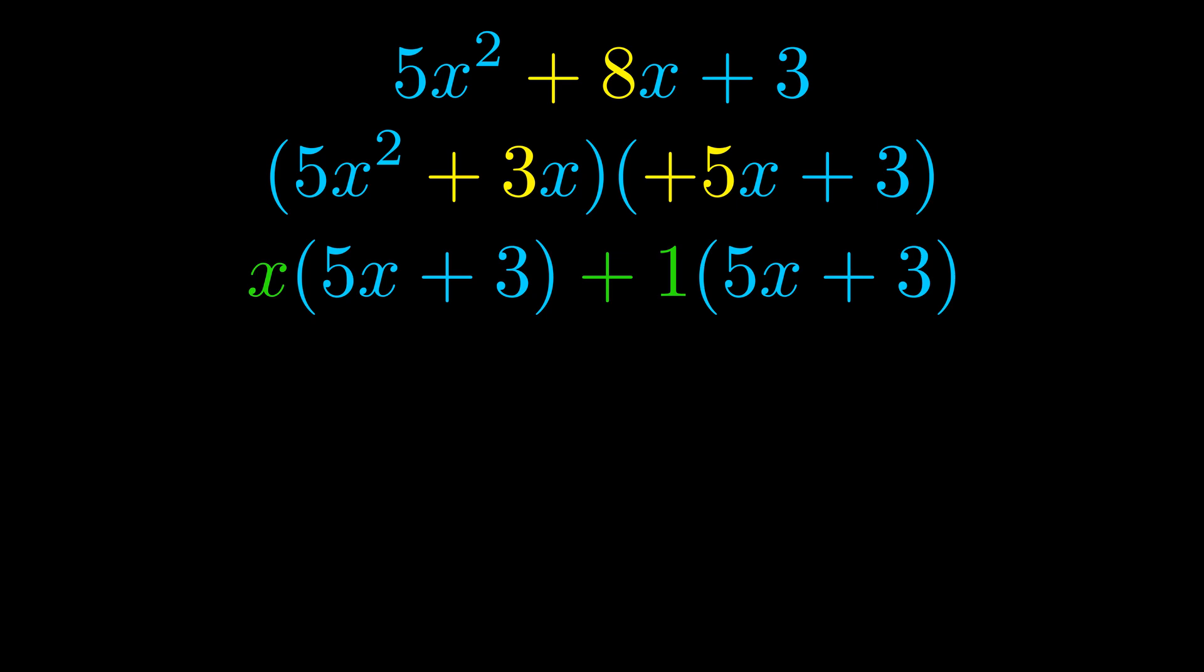Notice also how what remains inside of the parentheses is the same in both cases. The blue values are the same. Those blue values will become one of our factors and we will combine the two green values, the GCFs that we pulled out, to get the other one. And that is our fully factored equation.